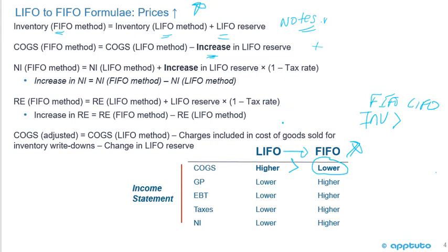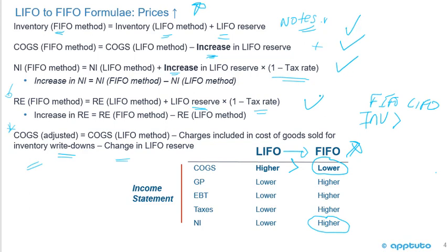For net income, under FIFO we have lower cost of goods sold, so we have higher net income. Net income under FIFO equals net income under LIFO plus the increase in the LIFO reserve (the change), times one minus the tax rate. Moving to the balance sheet, retained earnings under FIFO equals retained earnings under LIFO plus the total LIFO reserve (not just the change) times one minus the tax rate. For adjusted cost of goods sold: LIFO COGS minus changes included for inventory write-downs minus the change in the LIFO reserve.